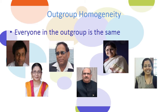When somebody experiences out-group homogeneity, it makes it much easier for them to also have bias towards the out-group, because they feel like they know everything important. It's easier for them to just lump everybody in the out-group together rather than take each person individually on his or her own merits.